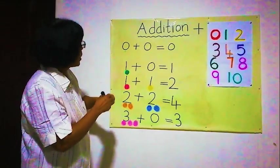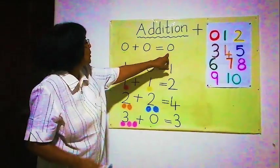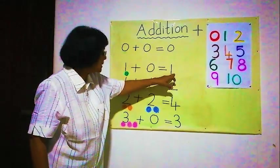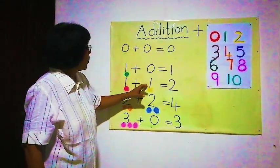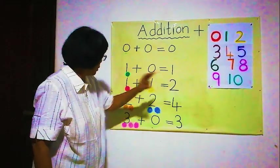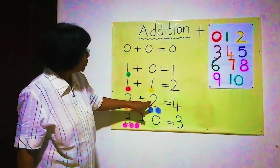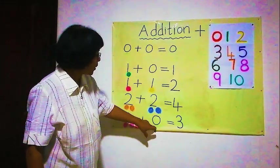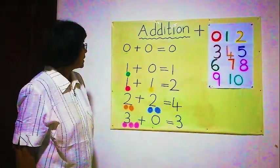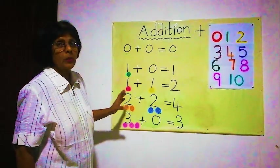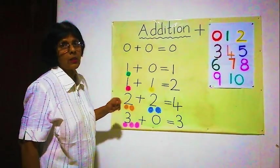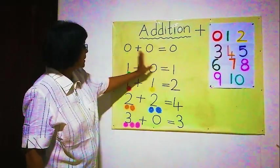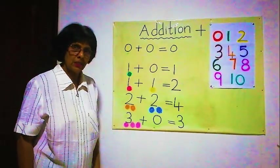Now here: zero and zero makes zero. One and zero makes one. One and one makes two. Two and two makes four. Three and zero makes three. One and two makes three. This way is very easy. Hereafter, we are not drawing balls — we are just writing the numbers only for the next lesson.